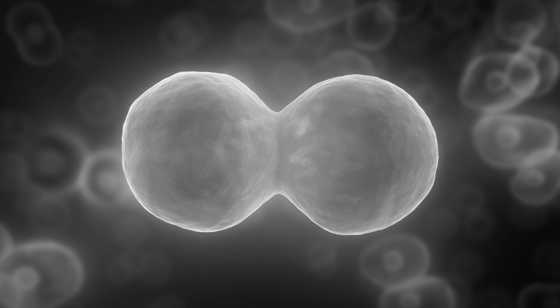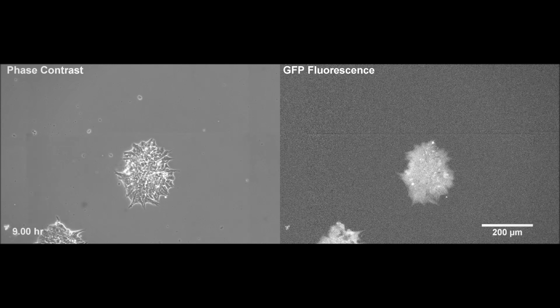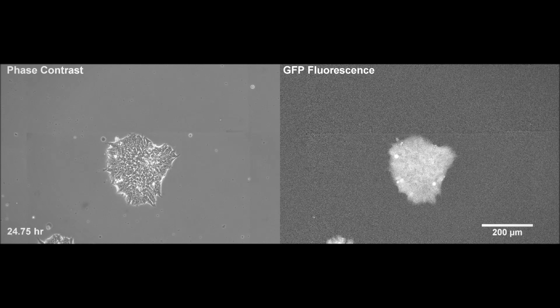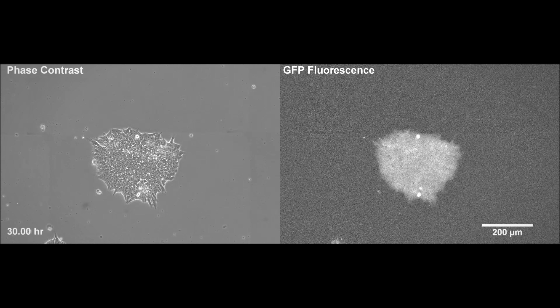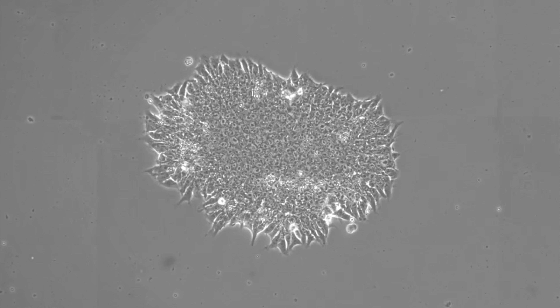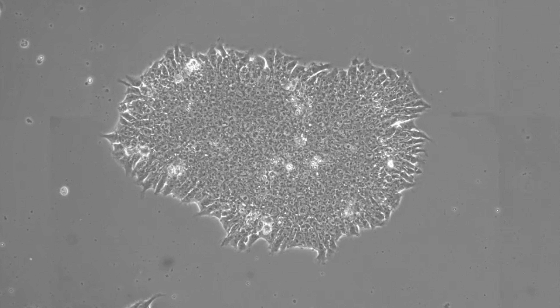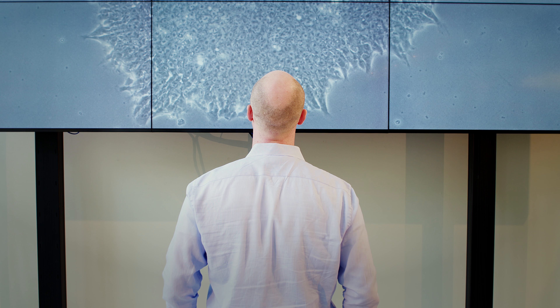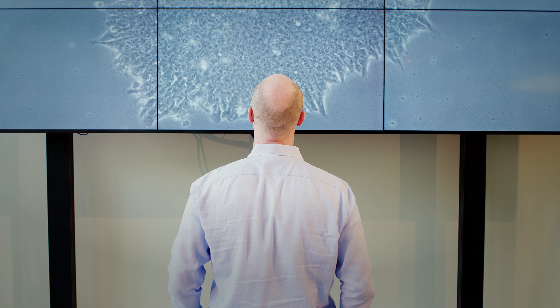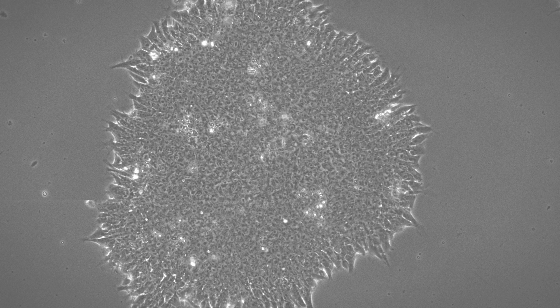Cells are dynamic, they're changing in time. If you look at a population of cells in a dish, each one can be doing a different thing at different points in time. You have over 200 different cell types in your body, and we don't really understand fully the process by which those cell types arise.